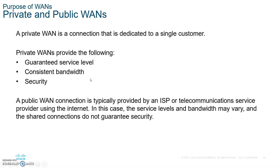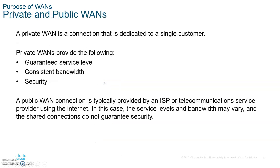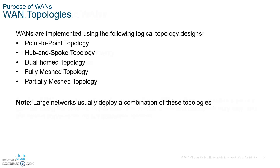The types of WANs out there: we have private WANs, which guarantee service level, consistent bandwidth, and security. Then you have public WANs, which are connections over the internet — if you go that route, you must use a VPN for security purposes. Please write those down: private WAN guarantees service level, consistent bandwidth, and security. The least expensive way is to go through the public WAN.